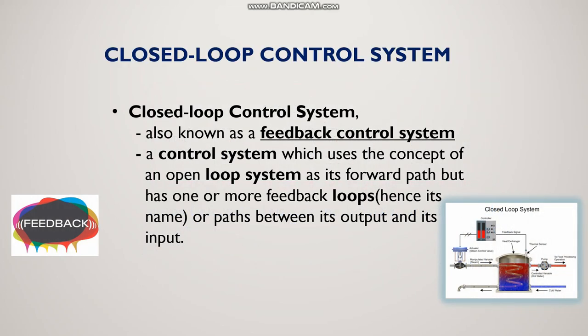The next one is closed loop system. What is meant by closed loop system? A closed loop system is a feedback control system. There will be a measurement element that gives feedback, and using a comparison element, we compare the reference value with the output value to find the error in the system. A control system which uses an open loop path as its forward path but has one or more feedback loops between its output and input is called a closed loop control system.